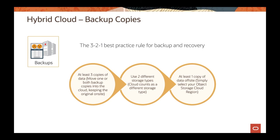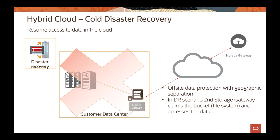Traditionally, the 3-2-1 strategy uses tapes vaulted remotely, which can be costly. Using cloud storage is cheaper and a better way to keep data secure. OCI provides at-rest encryption for object storage, so all your backup data is stored securely.